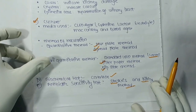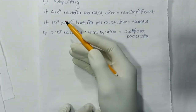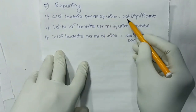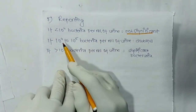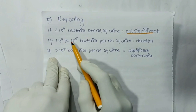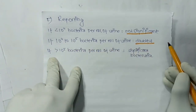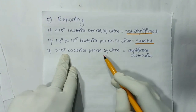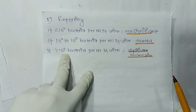For reporting: if the count is less than 10⁴ bacteria per mL of urine, that is not significant. If bacteria count is 10⁴ to 10⁵ per mL of urine, that is doubtful — repeat the test. If bacteria count is greater than 10⁵ per mL of urine, that is significant bacteriuria and indicates UTI.